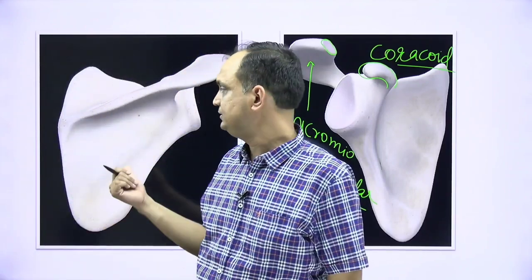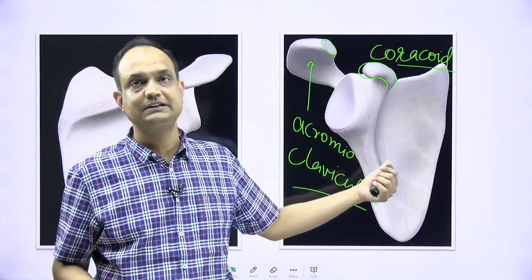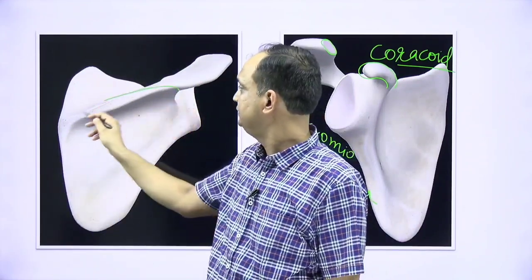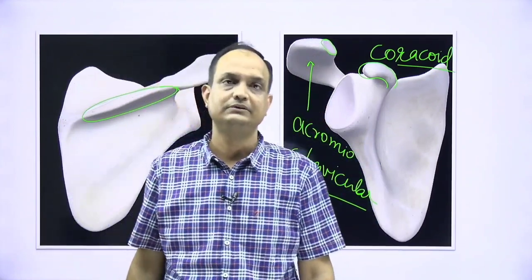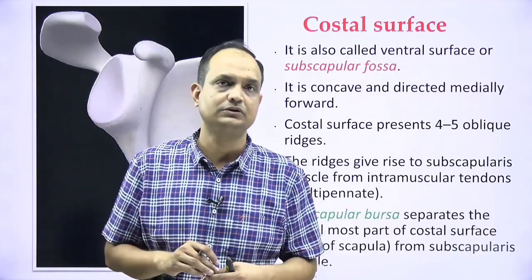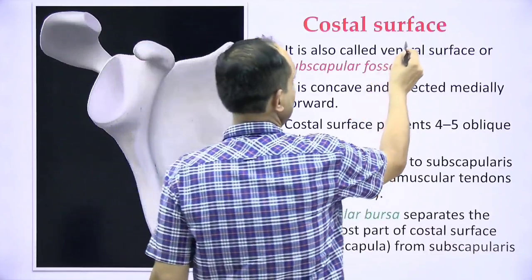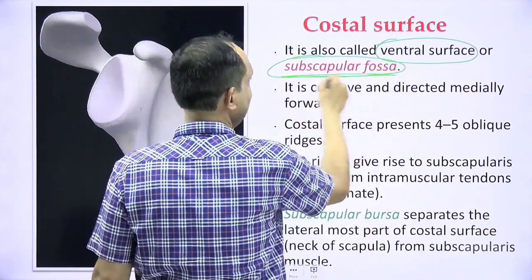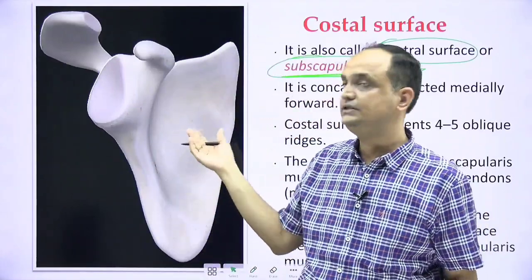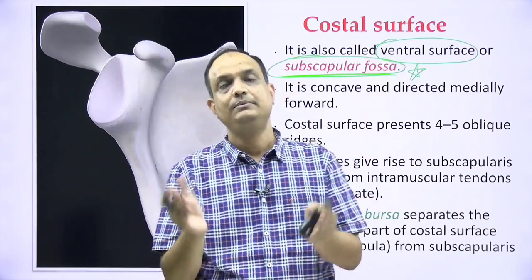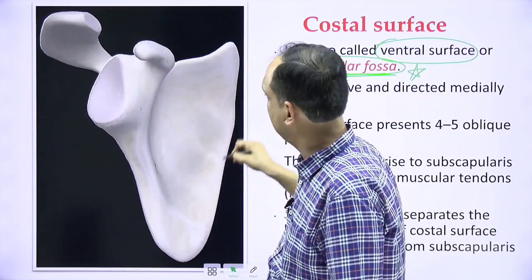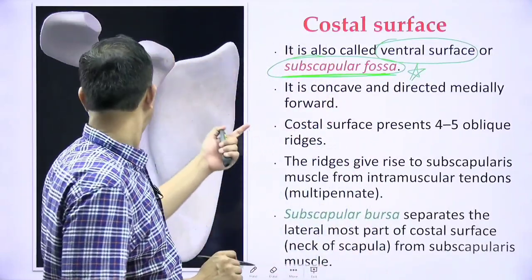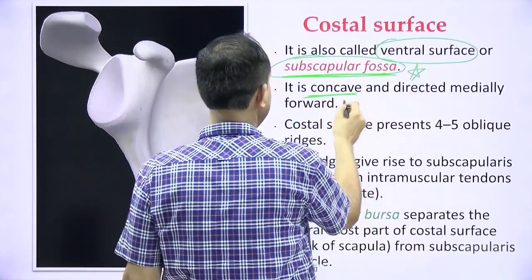This is the dorsal or posterior view of the scapula, and this is the anterior or ventral view. How to identify them? You can see that the costal surface does not have any kind of projection — the projection is always a feature of the dorsal or posterior surface. The costal surface is also known as the ventral surface, anterior surface, or subscapular fossa. The word subscapular means below the scapula, as it is the surface inside.